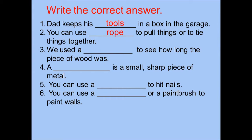Number three: We use the blank to see how long the piece of wood was. What is the correct answer? The correct answer is tape measure. Please read after teacher: We used a tape measure to see how long the piece of wood was.